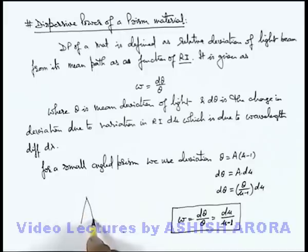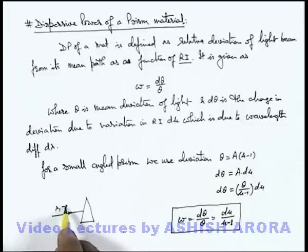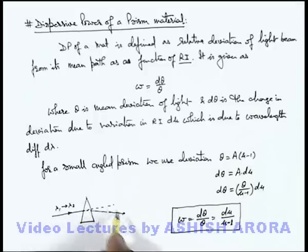For example, if this is a prism and if a light beam is incident onto it in which the wavelengths λ₁ to λ₂ all wavelengths are there, then in this situation we can see from the original direction, mean deviation of the light is θ, and λ₁ and λ₂